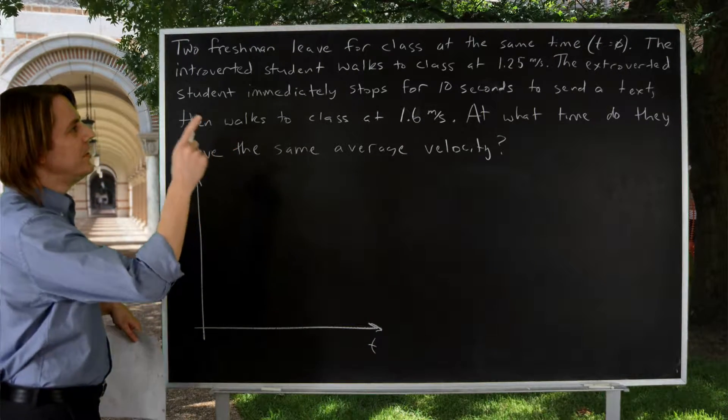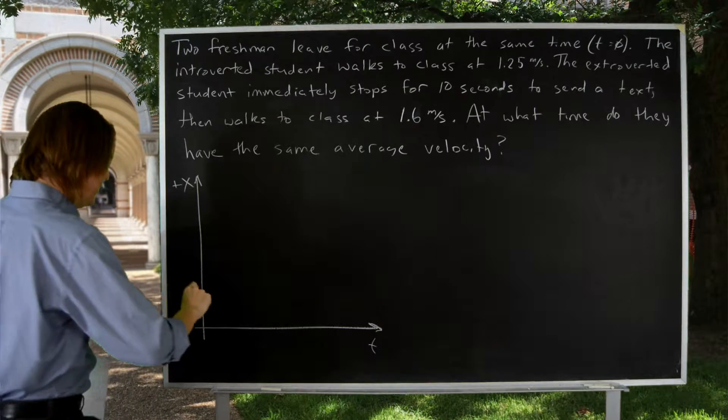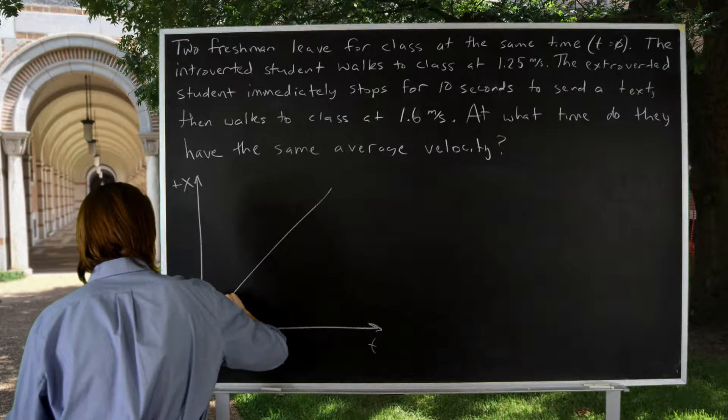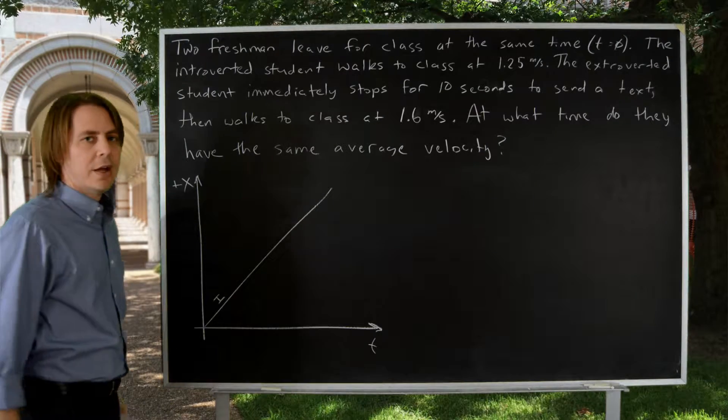So let's plot the introverted student first. Introverted student walks at a steady pace, so it's just a line. So there's the introverted student's position as a function of time.